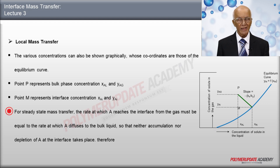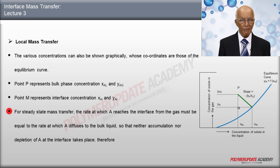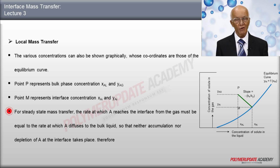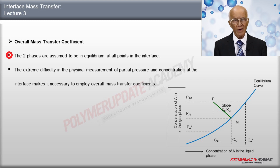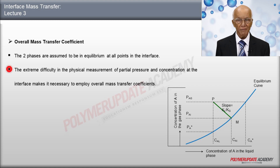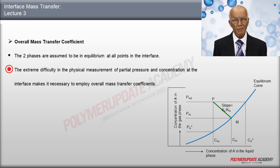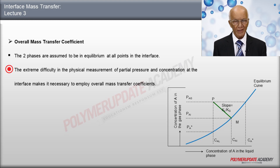The rate at which component A reaches the interface from the gas phase must equal the rate at which A diffuses to the bulk liquid, so that neither accumulation nor depletion of A at the interface takes place. The two phases are therefore assumed to be in equilibrium at the interface. The extreme difficulty in physically measuring partial pressure and concentration at the interface makes it necessary to employ overall mass transfer correlations.